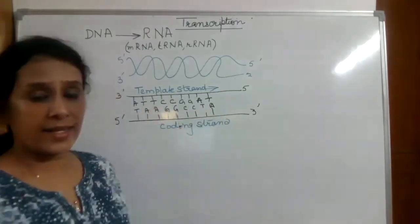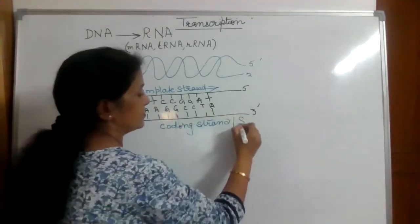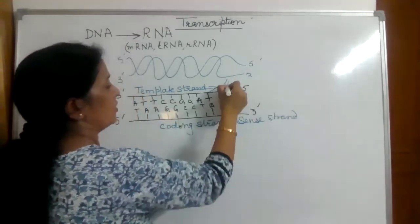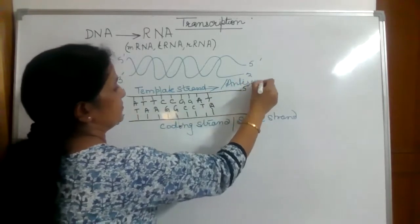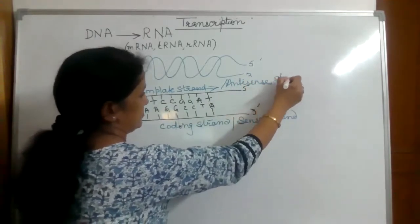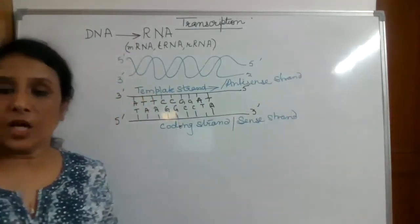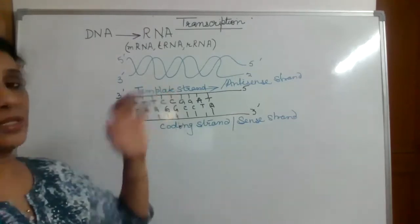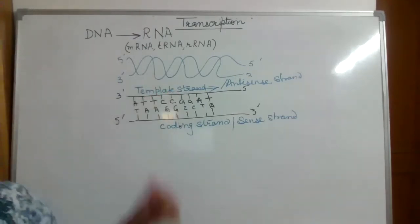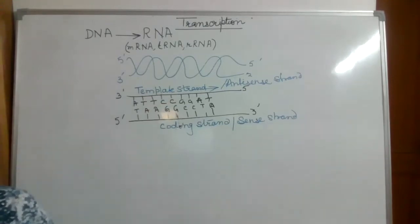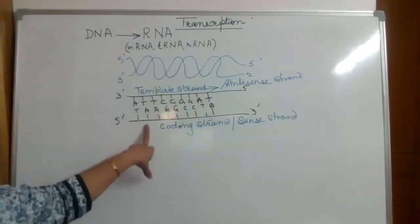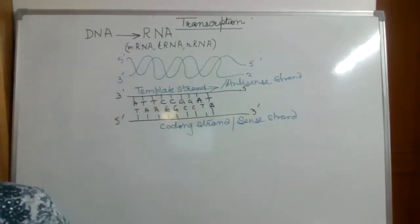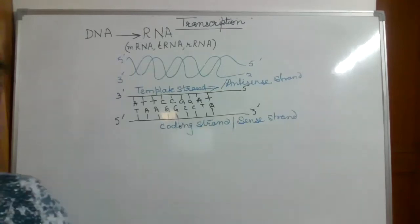The coding strand is also called the sense strand, and the template strand is called the antisense strand. Now there are two questions: one, why does transcription occur only on one strand and not on both strands? Second, why is the strand running in 5' to 3' direction — which is not participating in transcription — still called the coding strand?